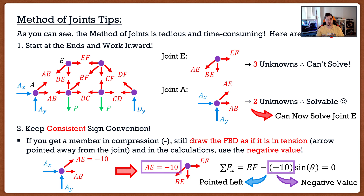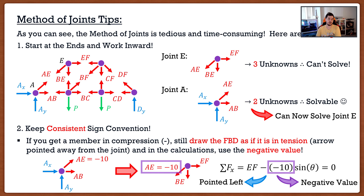Always keep all truss member forces drawn as tension in your free body diagrams. If you get a compressive force — which is very common — just add the negative to the magnitude; don't swap the arrows. Swapping arrows is a surefire way to lose marks, and the problem compounds: if one joint is wrong, every subsequent joint will also be wrong, like a wave propagating through the truss. Keep consistent sign convention — it's the number one mistake students make. This sign convention rule also applies to the method of sections, which we'll cover in the next video.